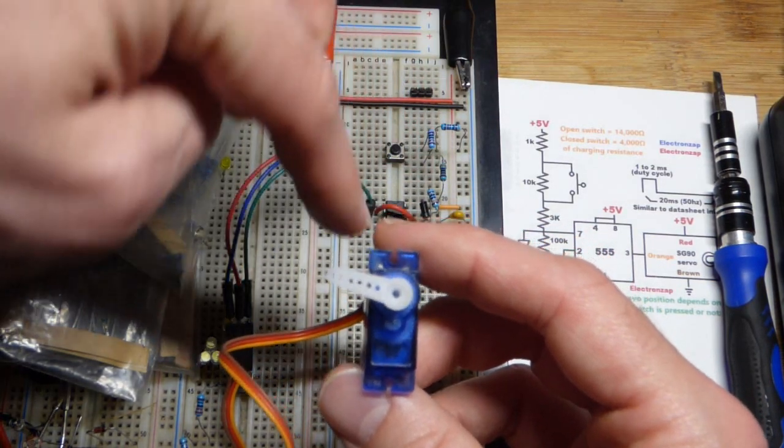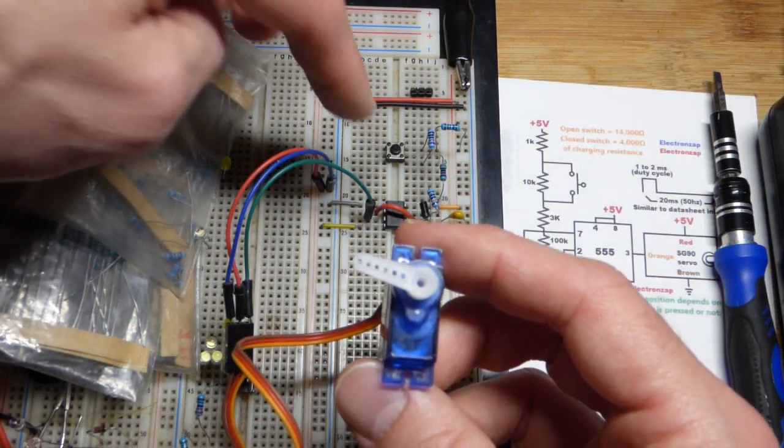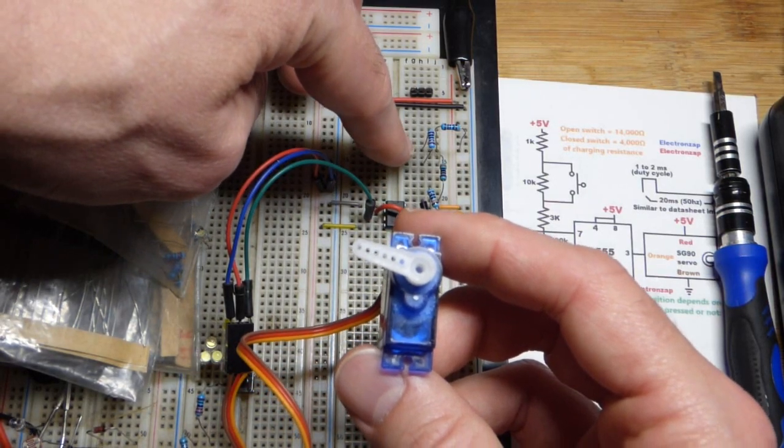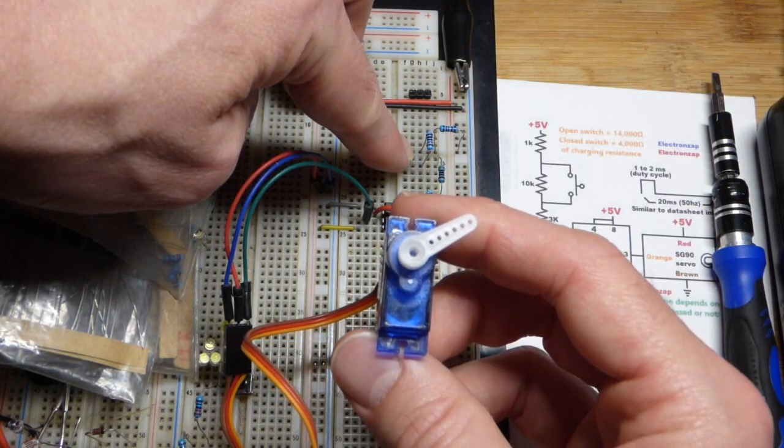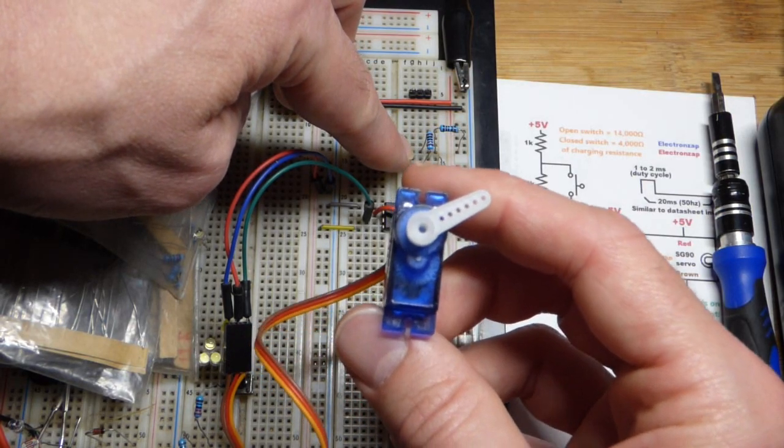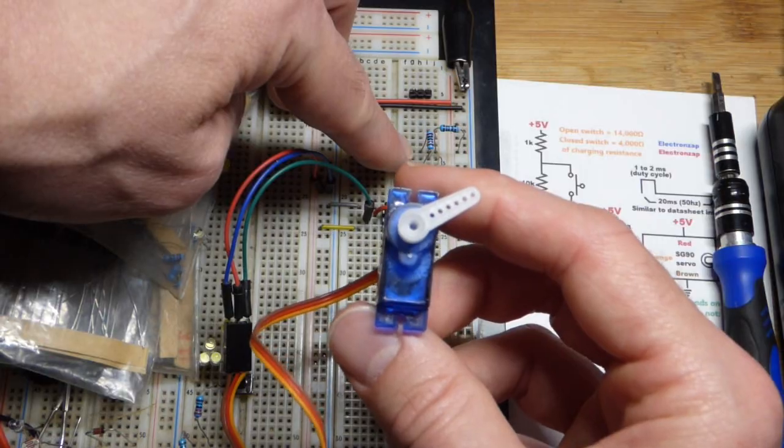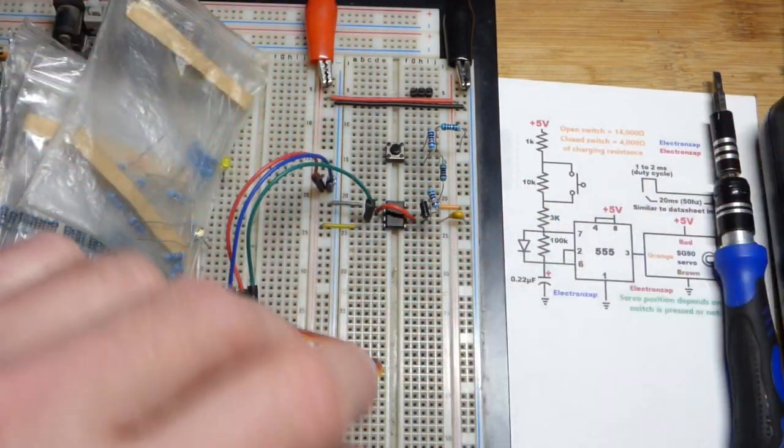Right now we have 14,000 ohms of resistance setting how long the pulse is. More resistance means longer pulse. When we go around the 10K resistor, we now have 4,000 ohms of resistance. So shorter pulse, and it moves the position of the servo.